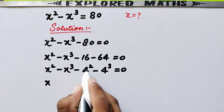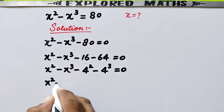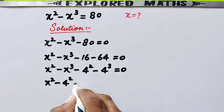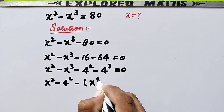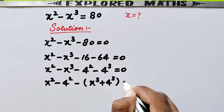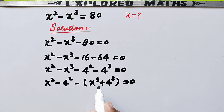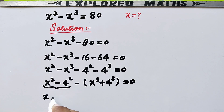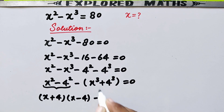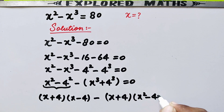Now we will join the square values and cube values together. So here is x squared minus 4 squared, and taking minus common from the cube terms, here will be minus open bracket x cubed plus 4 cubed close bracket, equal to zero. Now we can apply algebraic formulas: here is a squared minus b squared and here is a cubed plus b cubed. So this will be equal to x plus 4 times x minus 4, minus x plus 4 times x squared minus 4x plus 16, equal to zero.